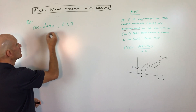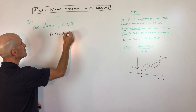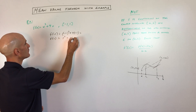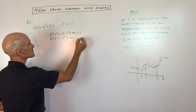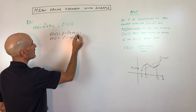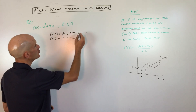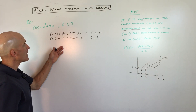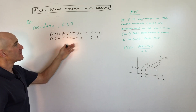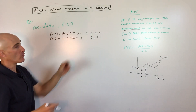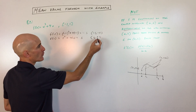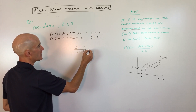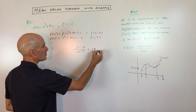We put negative 1 into our function: f of negative 1 equals negative 1 cubed plus 4 times negative 1, which is negative 1 minus 4, giving us negative 5. And f of positive 1 equals 1 cubed plus 4 times 1, which is 1 plus 4, giving us 5. So our two endpoints are negative 1, negative 5 and positive 1, positive 5. Now we find the slope: y2 minus y1 over x2 minus x1, so 5 minus negative 5 over 1 minus negative 1, which is 10 over 2, equal to 5.